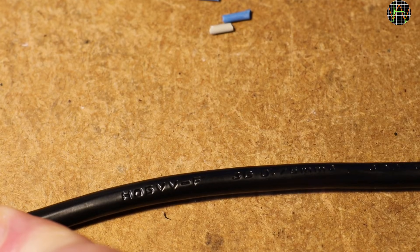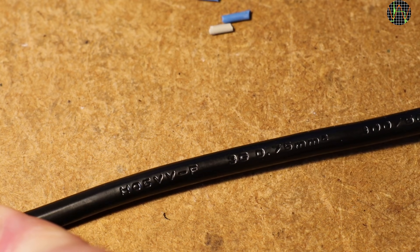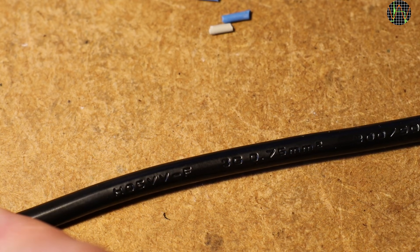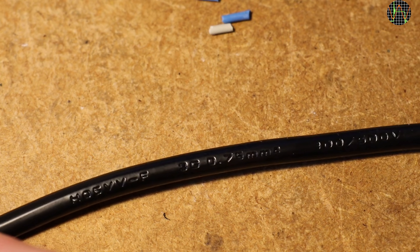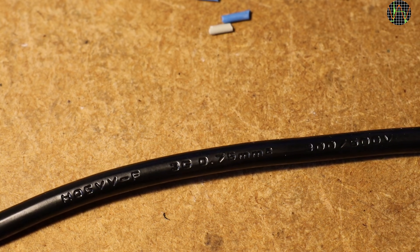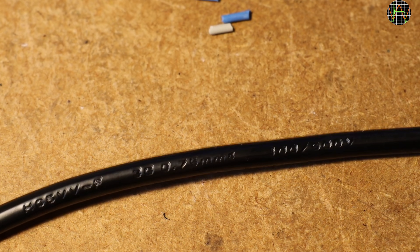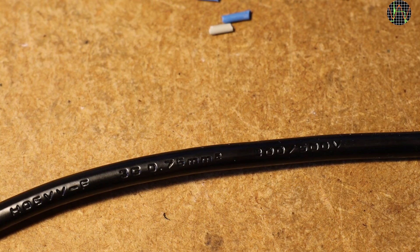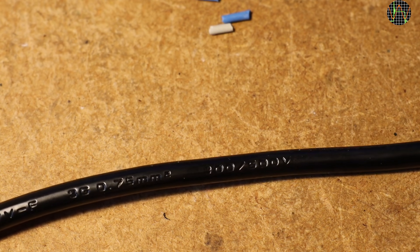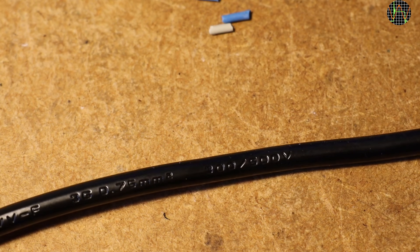In the video, the marking of the cable is kind of hard to read. It's H05VV-F 3G 0.75 mm² 300-500V, and I think this is supposed to mean 3 cores with an area of 0.75 mm² each.